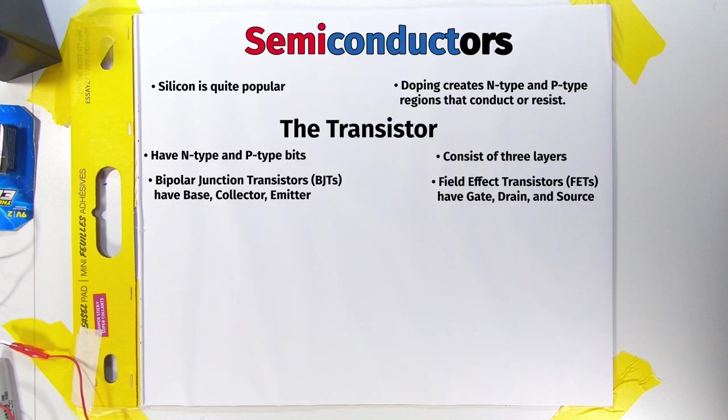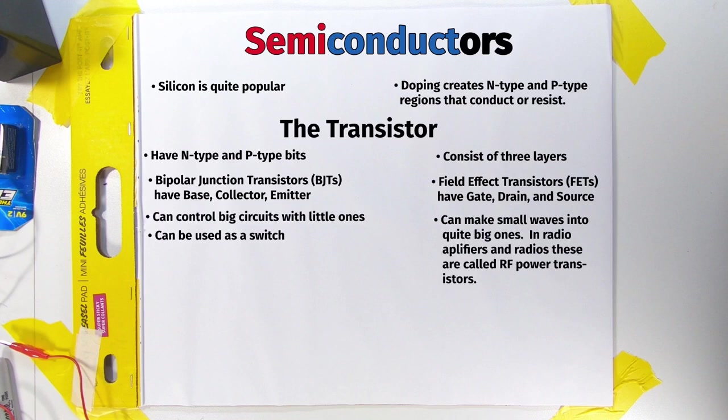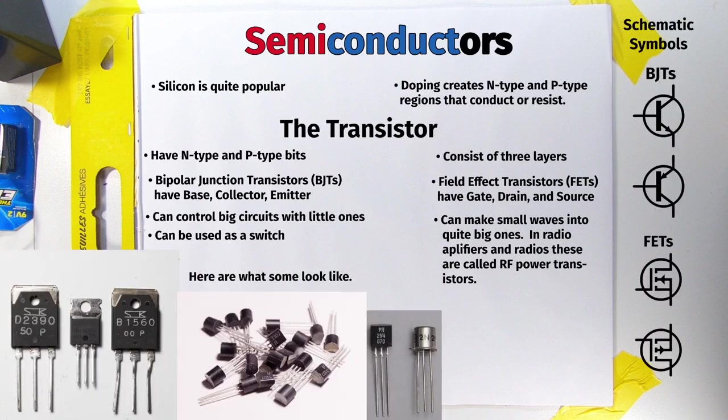The other type of transistors are field-effect transistors, or FETs. Their pins are the gate, the drain, and the source. Importantly, they can be used to control high-current circuits with low-current ones. And they can also convert a small signal into a much larger one, suitable for transmitting or causing yourself ear damage listening to Warpigs. In a radio, they're called the power transistors.